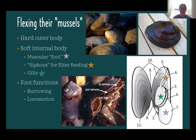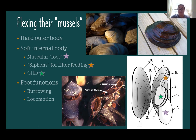Mussels have a hinged shell — their hard outer body, kind of like armor — because their internal body is very soft and needs outer protection. Key internal features include a muscular foot, shown as number seven on the diagram, used for burrowing and locomotion. They have siphons for filtering and feeding — an in-siphon and an out-siphon. These provide nutrients but can also indicate if the water column is healthy. They also have gills and need highly oxygenated water.